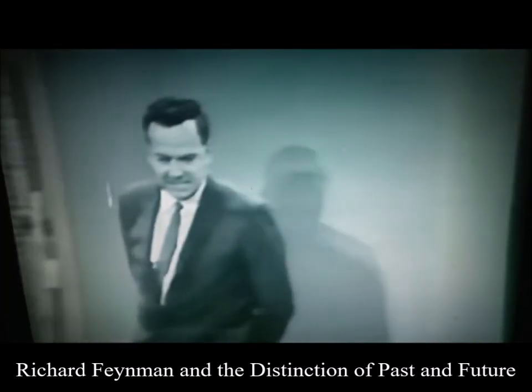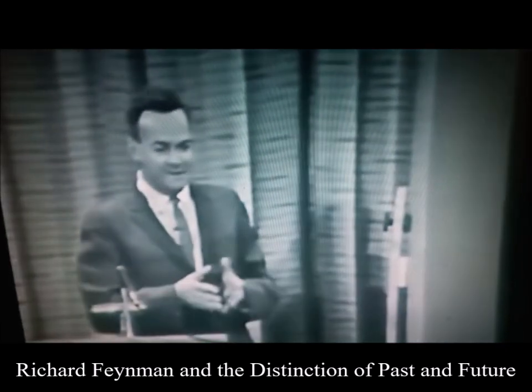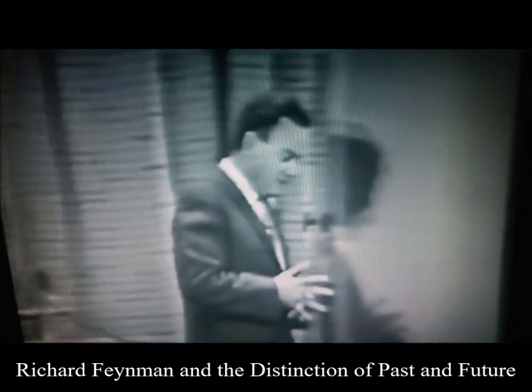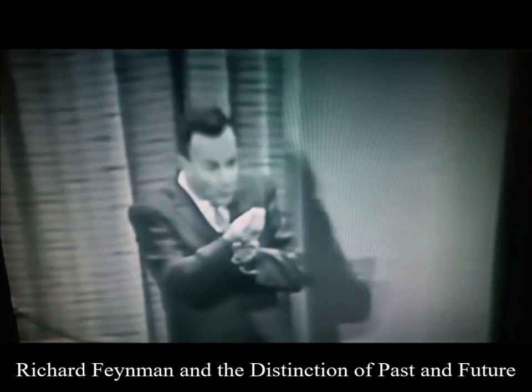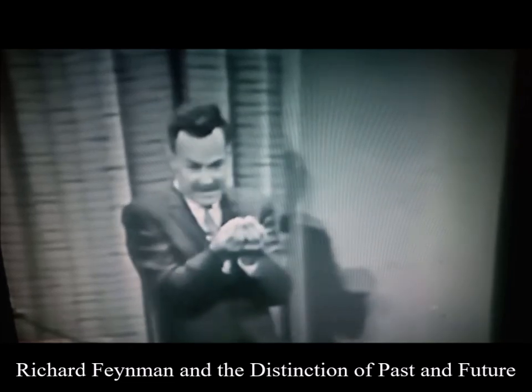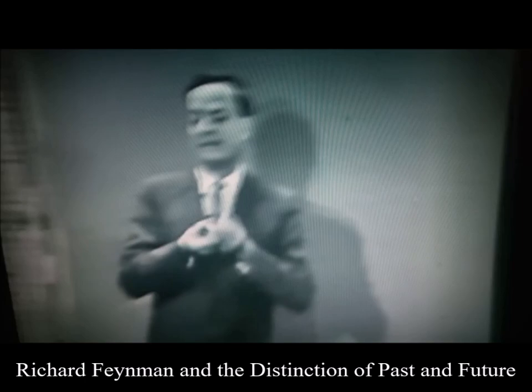This obvious distinction between what happens, the past and the future, and this obvious irreversibility of all phenomena, you would think would most likely have its interpretation in that some laws, some of the motion laws of the atoms, are going one way. That the atom laws are not such that they can go either way.